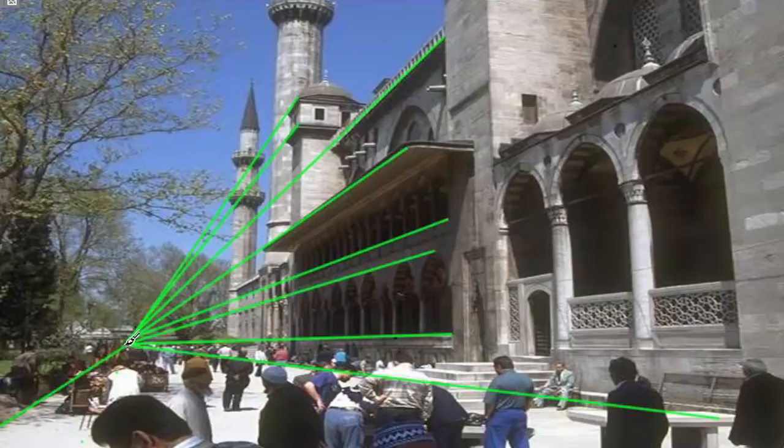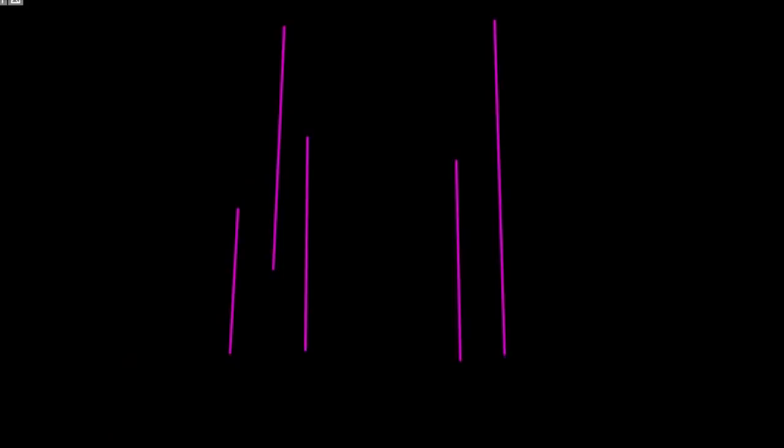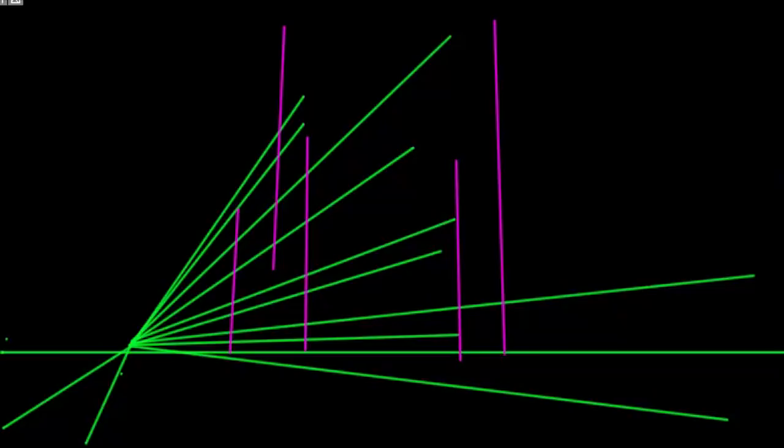You'll also notice that the vertical lines on the building are perfectly plumb — that means they go straight up. Even though the lines from the side of the building are pointing toward the vanishing point, the vertical lines are still perfectly vertical or plumb. So the vertical lines in a vanishing point perspective are not distorted.